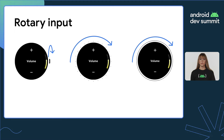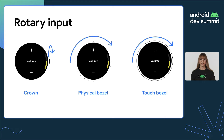There are three main sources of rotary input on wearable devices. First is a physical crown, also called a rotating side button. The other two are rotating bezels — either a physical bezel that rotates along the outer edge of the screen, or a touch bezel that includes a circular touch zone around the screen.